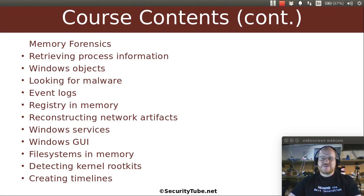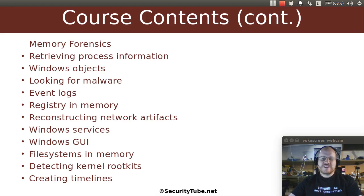We will talk about memory forensics. We will use tools such as Volatility to retrieve process information, look at various Windows objects, search for malware, and look into event logs — they're not just stored on disk, there's also information to be gleaned from memory. We'll look at the registry in memory, how we can reconstruct network artifacts, look at Windows services, the Windows graphical user interface, file system information in memory, ways of detecting kernel rootkits in memory, and creating timelines based on information stored in memory.